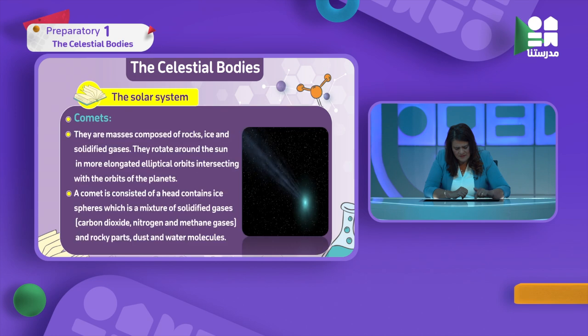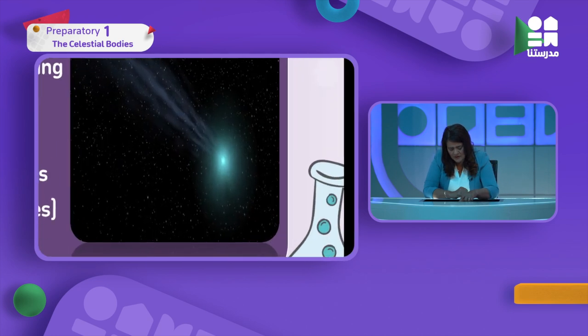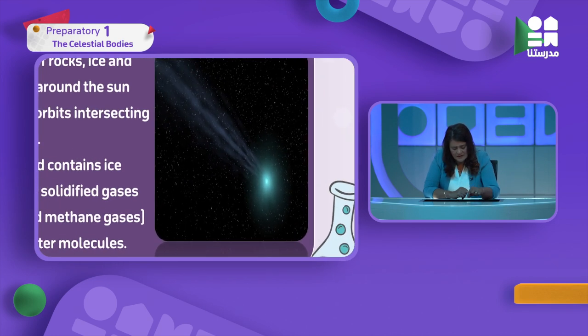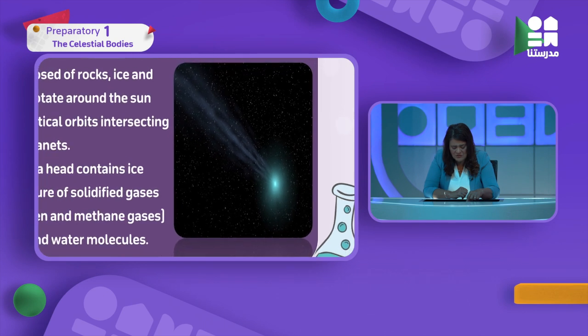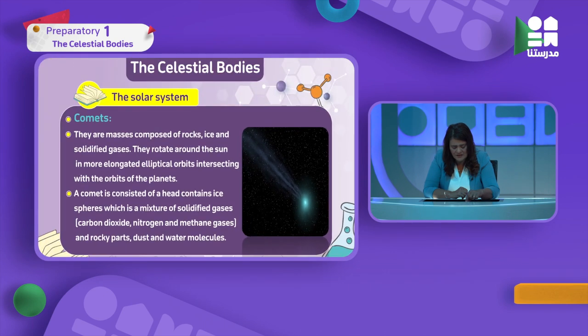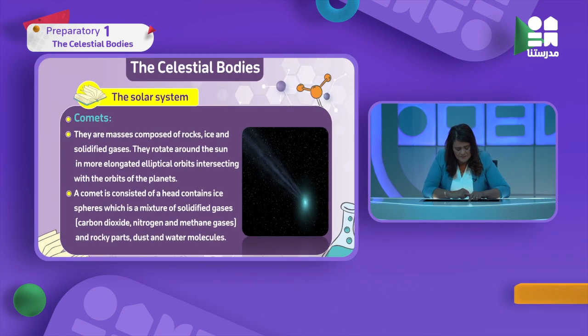Here is the shape of the comet - let's enlarge it a bit. This is the shape of the comet. It is not big, but it rotates around the sun and consists of a head and a tail, as we agreed.